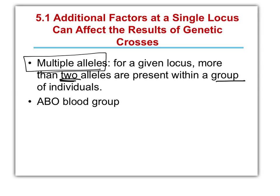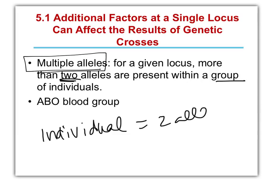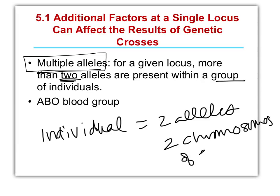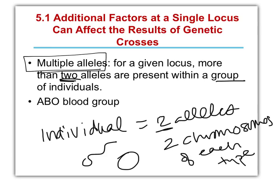Any individual — each individual — can only have two alleles. Why is that? Because they only have two chromosomes of each type: two number ones, two number twos, two number threes, two number fours. One came from the sperm that made you, one came from the egg that made you. So each individual can only have two alleles, but a population can have lots more than that.